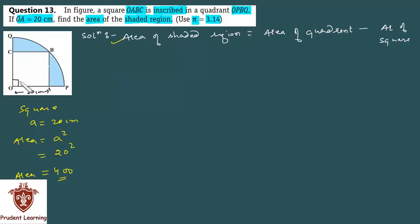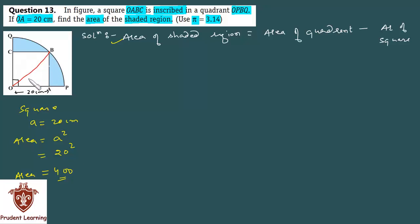अगर मैं O और B को join करूँ, तो यह भी sector का radius है. OP भी radius है, OQ भी radius है, और OB भी radius है. और fortunately OB जो है वो इस square का diagonal है. तो हम क्या करेंगे — square के diagonal का length find कर लेंगे, और वही हमारे sector का radius होगा.